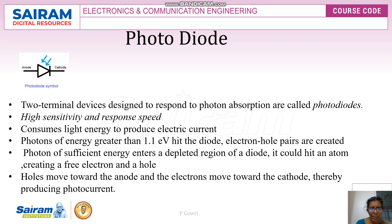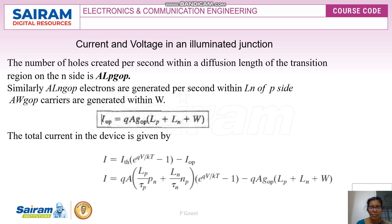A photodiode consumes light energy and produces electric current. Photons with energy greater than 1.1 electron volts hit the diode and generate electron-hole pairs. Only photons with sufficient energy that enter the depletion region create free electrons and holes. Holes move toward the anode and electrons move toward the cathode when the device is reverse biased, thereby producing a photocurrent.